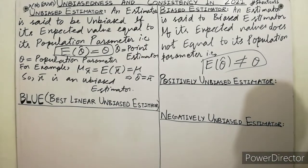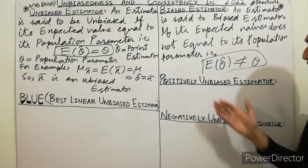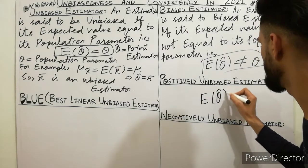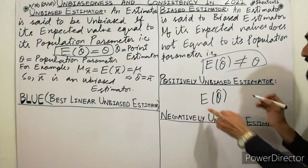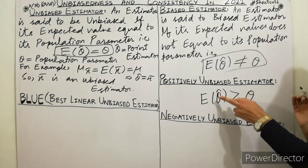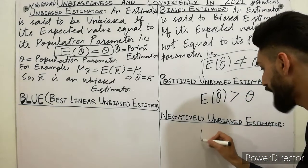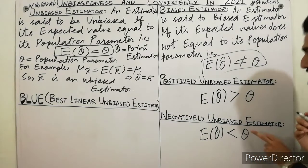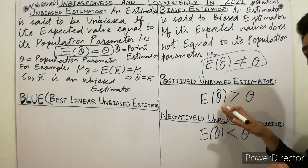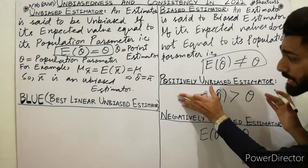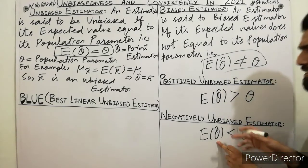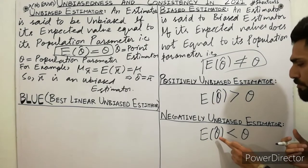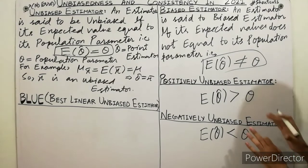Now the difference between positively and negatively biased estimators. If E(θ̂) > θ, this is called a positively biased estimator. If E(θ̂) < θ, this is called a negatively biased estimator. You can write the definition yourself: if the expectation of the point estimator is less than the population parameter, it is negatively biased.